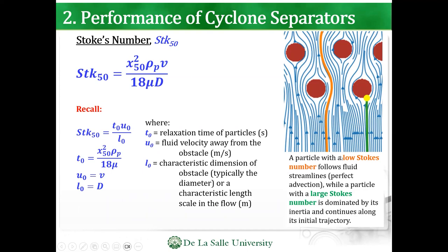With a low Stokes number — shown in orange — you get perfect advection. While a particle with a large Stokes number is dominated by its inertia and continues along its initial trajectory — it just impacts the wall. The Stokes law formula uses relaxation time times the velocity over the diameter.